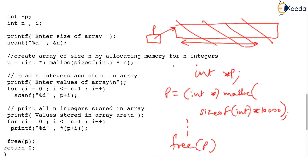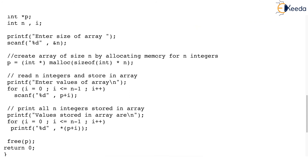So that's how you create an array dynamically using malloc. I hope you have understood all the aspects of this. Thank you very much.